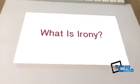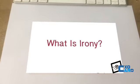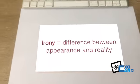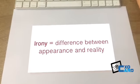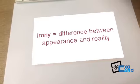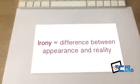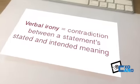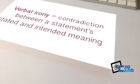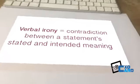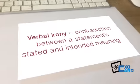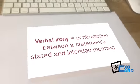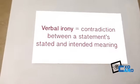Irony usually signals a difference between the appearance of things and reality. For instance, Wikipedia defines verbal irony as a contradiction between a statement's stated and intended meaning.